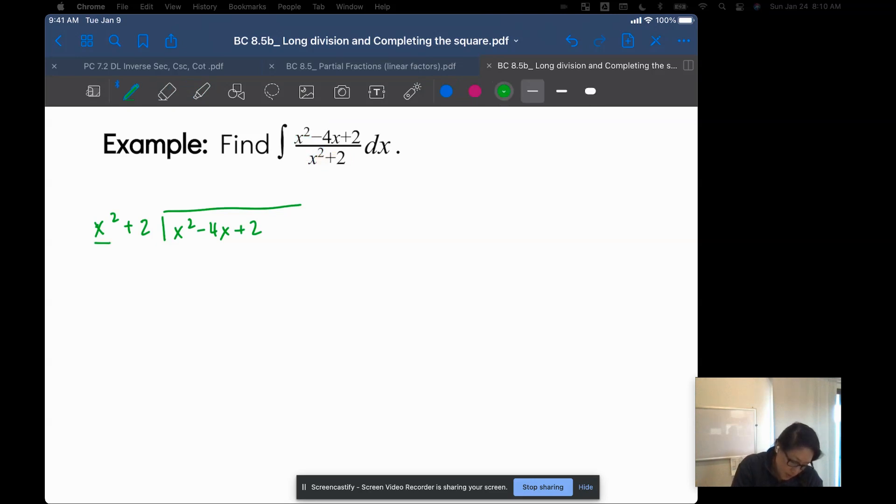So x squared goes into x squared one time, I multiply that through, I get x squared plus 0x plus 2, just be careful that you match your like terms. We're going to subtract, so I'm going to just change the signs on everything, and I get negative 4x plus 0 is negative 4x, and then it looks like my constants cancel. I already worked down to the constant, so I don't need to go any further, so I get a remainder of negative 4x over x squared plus 2.